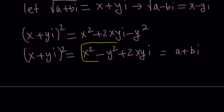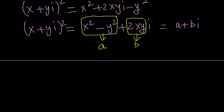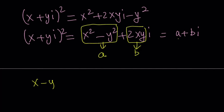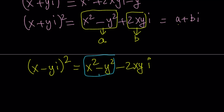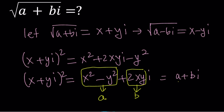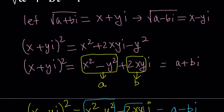The real part of this complex number equals the real part of a plus bi, and the imaginary part equals b. So we get a system of equations. Now my claim is that this implies the square root of a minus bi equals x minus yi. When we square x minus yi, we get something very similar, except the imaginary term is negative 2xyi. We know the real part equals a and the imaginary coefficient equals b, so this gives us a minus bi — proving our claim.